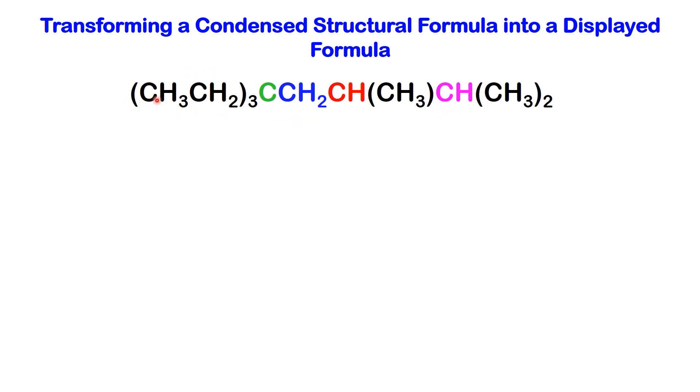Starting from the left side of the molecule and reading from left to right, we observe that the molecule begins with (CH3CH2)3. This notation indicates that there are three groups of CH3CH2 attached to a central carbon atom. To begin, let's focus on the central carbon atom and draw it.